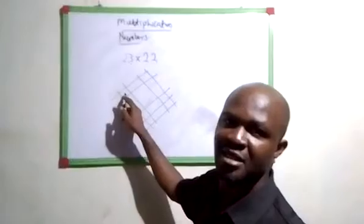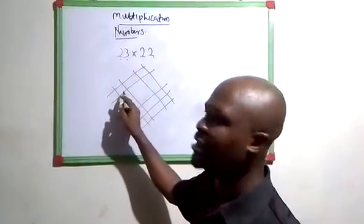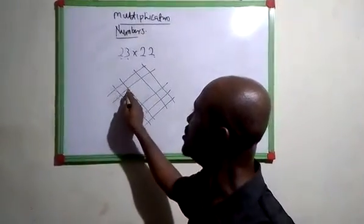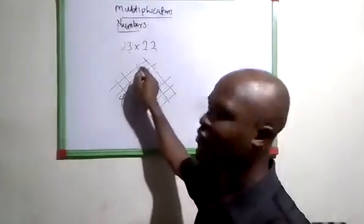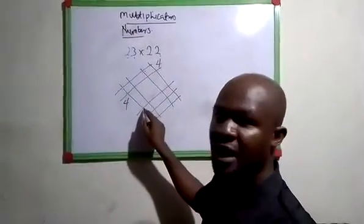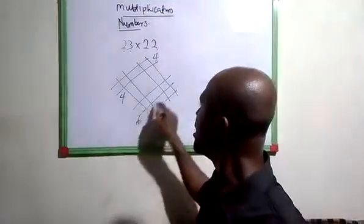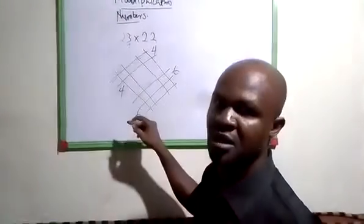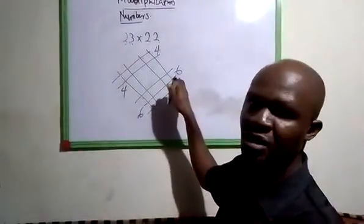Where the lines intersect, you number them accordingly. So for here, 1, 2, 3, 4, we have 4. Here is also 4, put 4. Here is 6, put 6. And here is also 6, put 6.